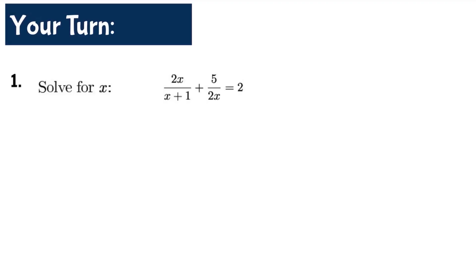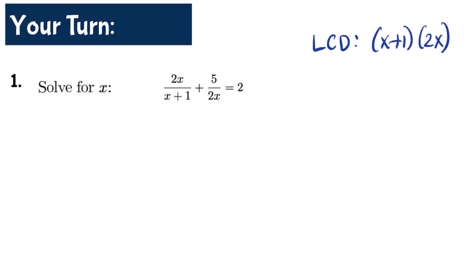Question 1: solve for x in the equation 2x/(x+1) plus 5/2x equals 2. What is the LCD for this problem? The denominators are (x+1) and 2x, so the LCD is (x+1)(2x).